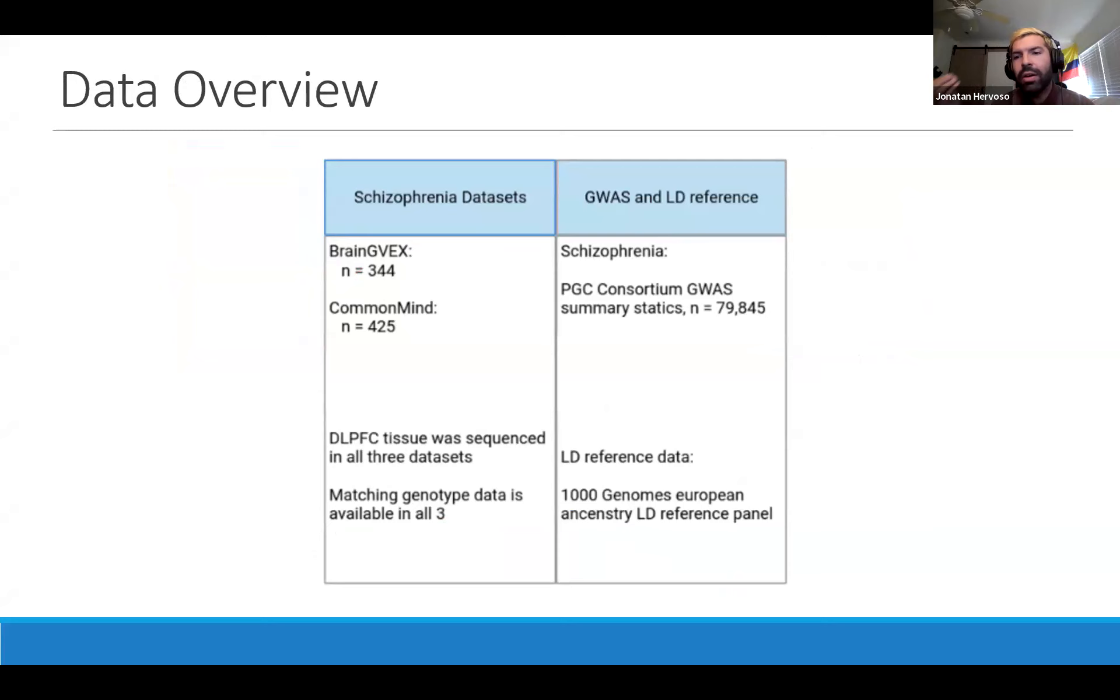We have paired RNA-seq data and genotypes for all of the samples I've stated. On the GWAS side and the LD reference, we'll be looking at the PGC Consortium GWAS summary statistics. We have about 80,000 individuals between cases and controls, and the LD reference panel is the 1,000 Genomes European ancestry.